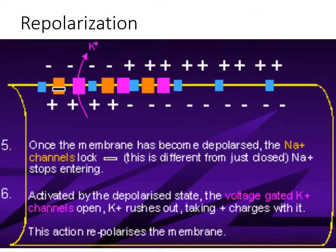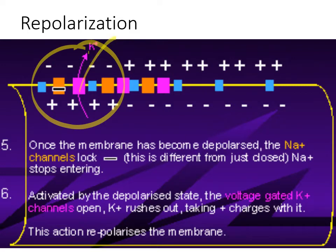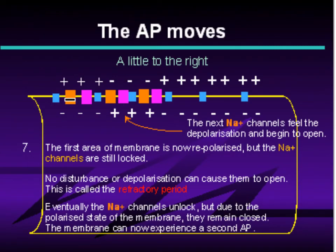In the repolarization part, for this particular area, once we get to the depolarized state, the potassium channels are going to open up and potassium is going to move to the outside. That's going to start to reestablish this positive charge on the outside as the potassiums move. We're going to get less positive on the inside, so it's starting to form negative on the inside here. The potassium ions are rushing out, making it positive on the outside again and negative on the inside. This reestablishes the resting potential.